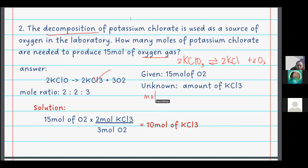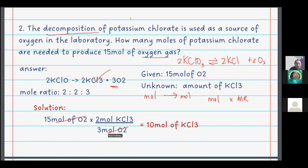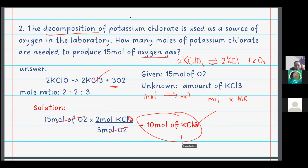The given is in moles and what we're looking for is also moles, so we only need the mole ratio part of the pattern. So we have 15 moles of O2 times the mole ratio — 2 moles of KClO3 over 3 moles of O2. That gives 15 times 2 equals 30, divided by 3, which is 10 moles of potassium chlorate. The answer is correct — the student just left out the oxygen subscript while typing.